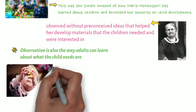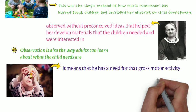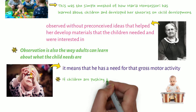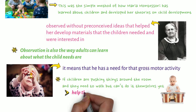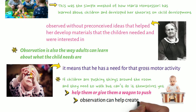Observation is also the way adults can learn about what the child's needs are. For example, if a child starts banging on objects, it means that he has a need for that gross motor activity, so give him a drum. If children are pushing things around the room and they need to walk but can't do it themselves yet, help them or give them a wagon to push. This is how observation can help create harmony, fulfilling the child's current needs.